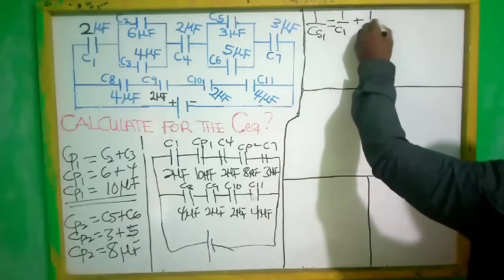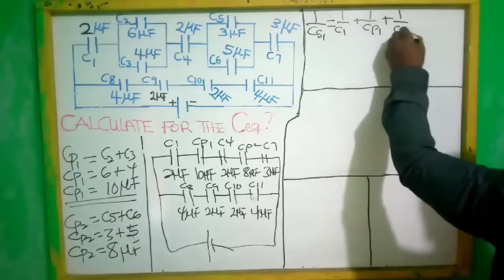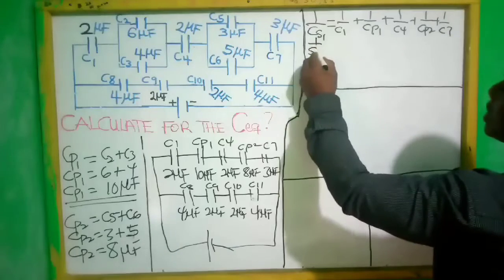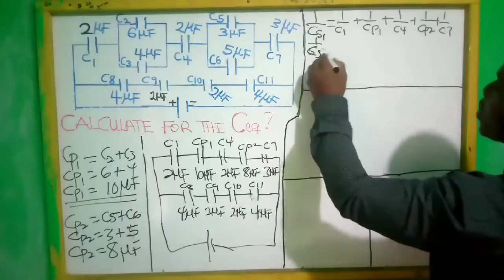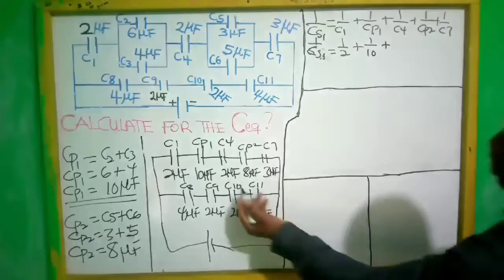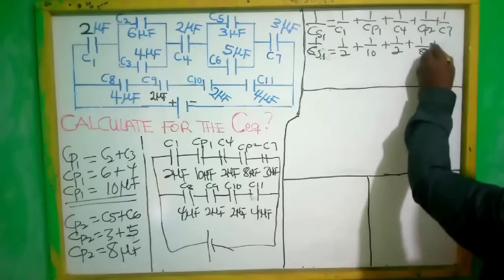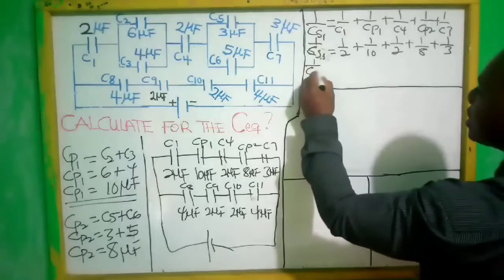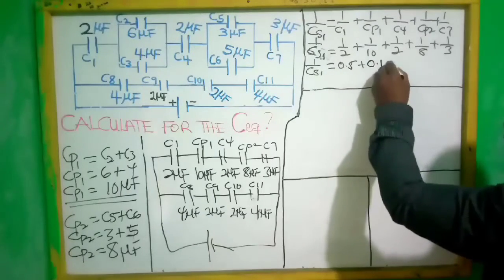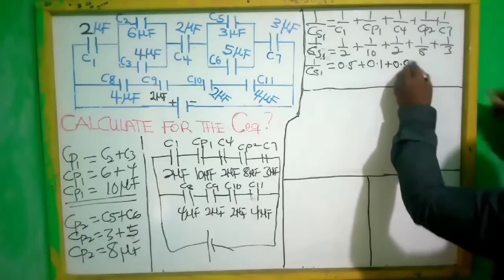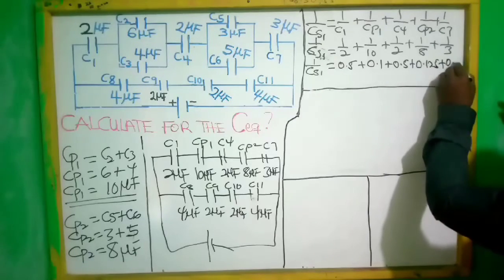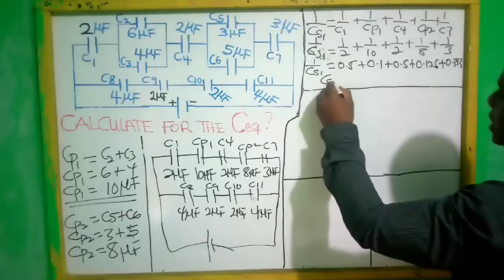For C_series1, we have: 1/C_s1 = 1/C1 + 1/C_para1 + 1/C4 + 1/C_para2 + 1/C7, which is 1/2 + 1/10 + 1/2 + 1/8 + 1/3. Converting: 1/2 = 0.5, 1/10 = 0.1, 1/8 = 0.125, and 1/3 = 0.333.